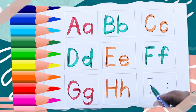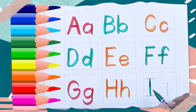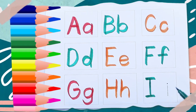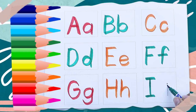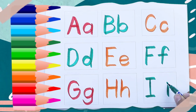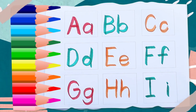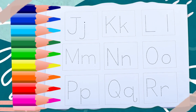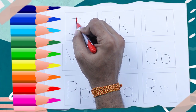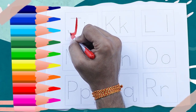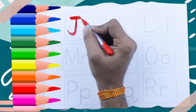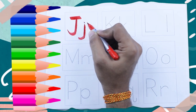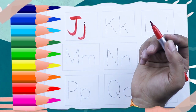Green color capital I, I for ice cream. Green color small i, i for ice cream. Red color capital J, J for jug. Red color small j, j for jug.